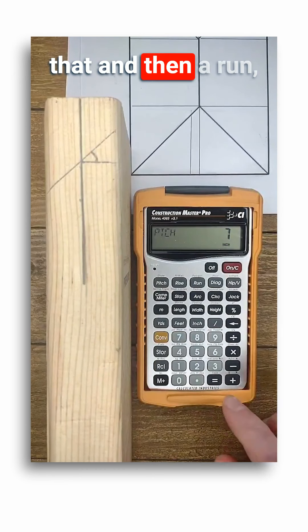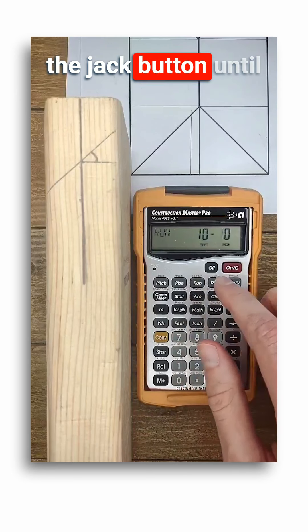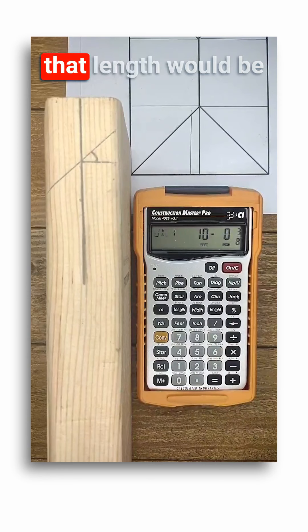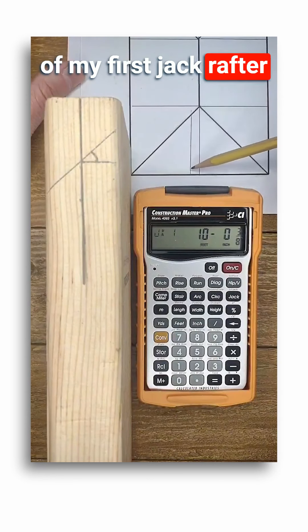Here I've drawn in my first jack rafter. Now if the plans called for a seven inch pitch, I'd enter that and then a run, let's say 10 feet. Now I'll push the jack button until JK1 displays.